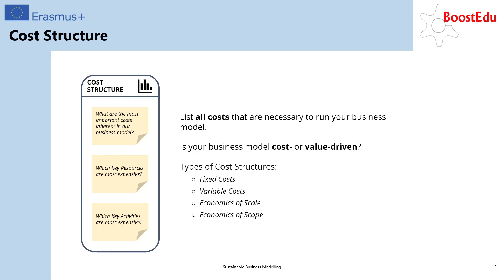The ninth and final building block describes the cost structure. Here you want to list all the costs that are necessary to run your business model and make sure that your cost structure is aligned with your value proposition. In general, there are two different cost structures your business model can lean towards. The first one is a cost-driven structure, where the focus lies on minimizing cost where possible, which can be seen for example in the aviation industry. The second one is a value-driven cost structure, where the focus lies more on the value creation itself, and less on the costs that are necessary to run the business model.